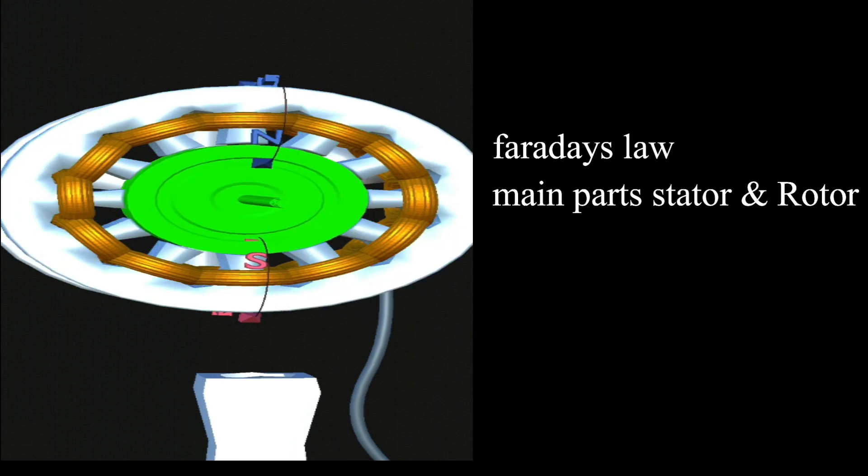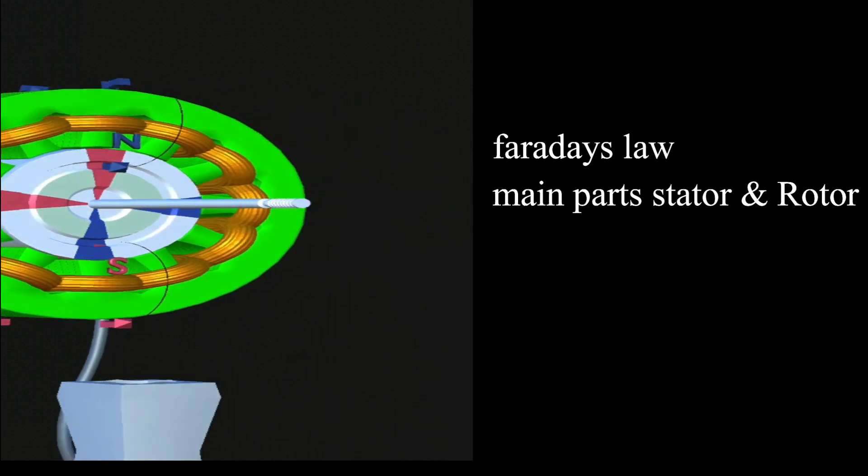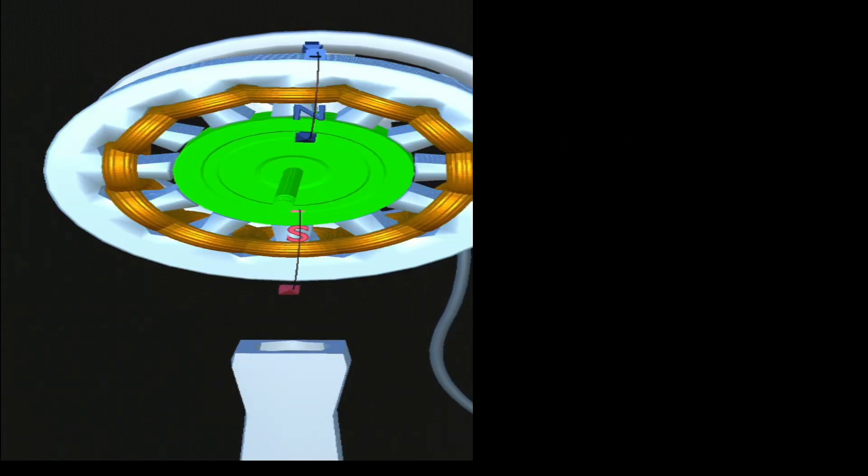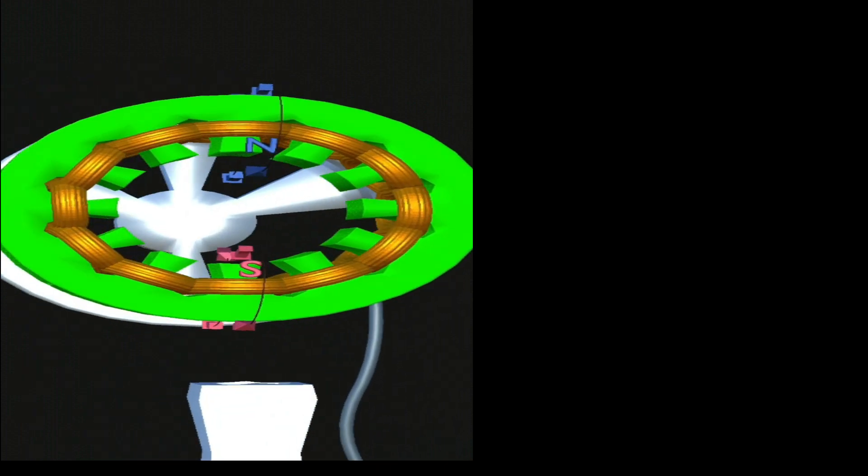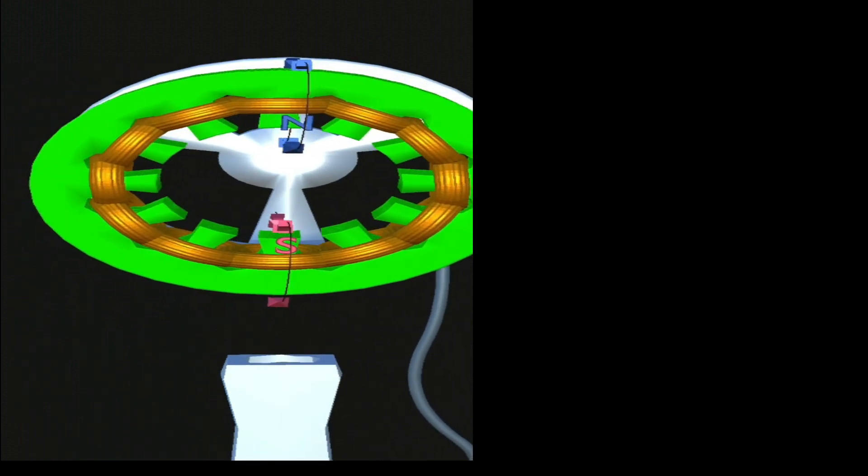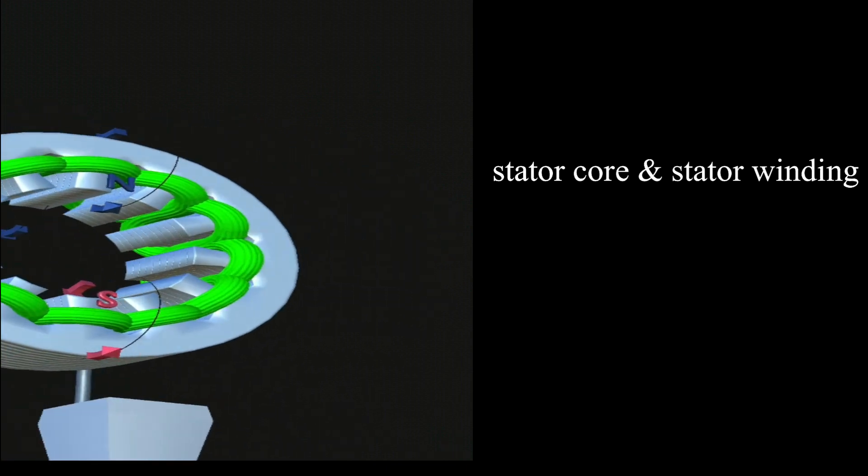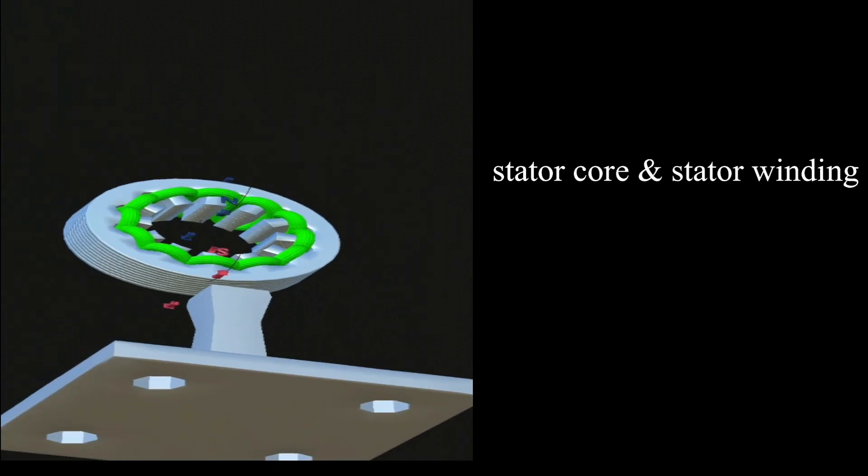So this is the stator, and this is the stator core, and this is the stator winding. The stator is the stationary part and it carries the stator winding. Normally, a single-phase induction motor is not a self-starting motor. That's why we are using an auxiliary winding to give the initial rotation.